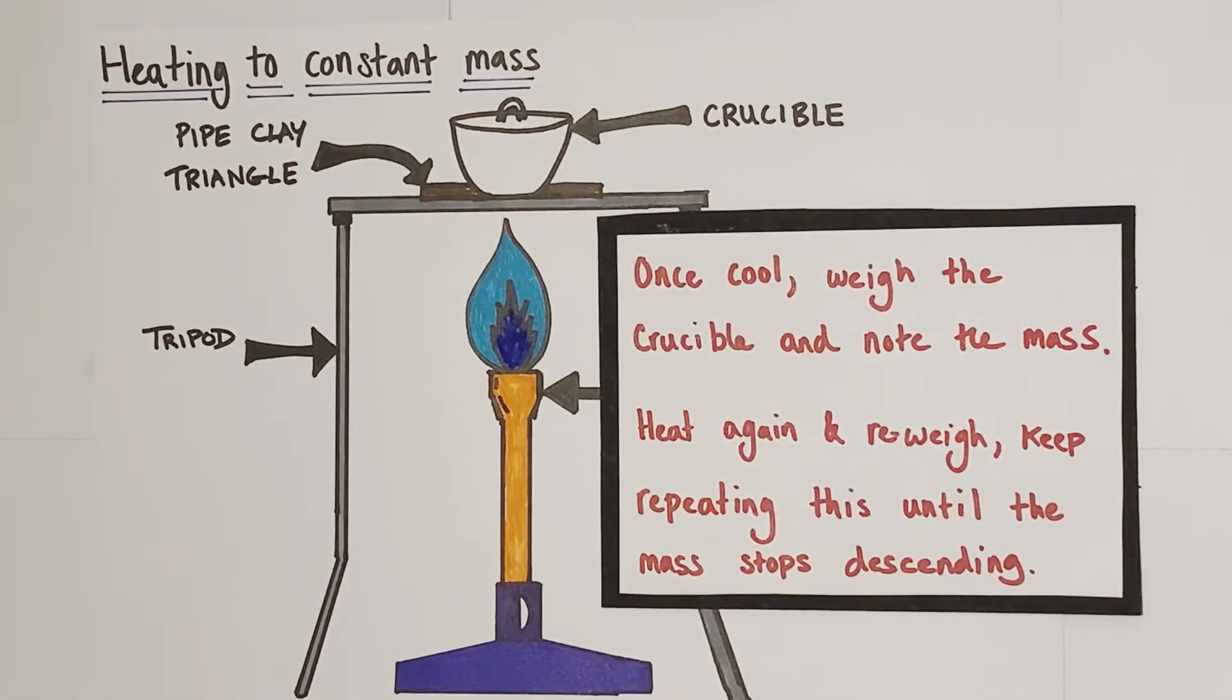Once that five minutes of heating and lifting the lid is up, you would then turn your Bunsen flame to a safety flame, a yellow flame, move it to one side on the heatproof mat and allow your crucible to cool down. Once sufficiently cool you would then take it to the electronic balance and weigh the mass of the crucible, lid, and the now heated hydrate and record and note that mass in rough.